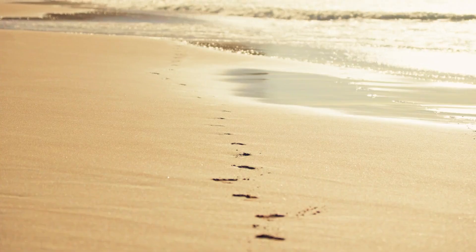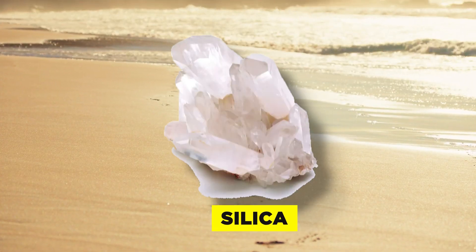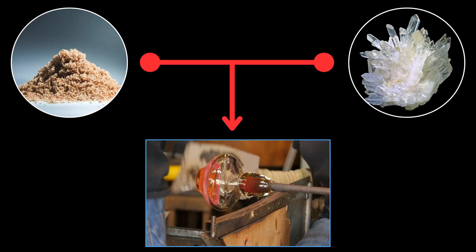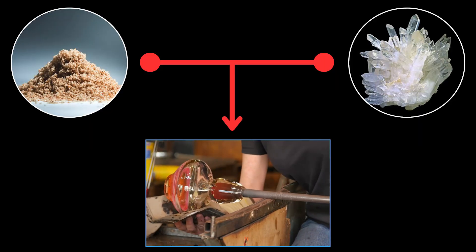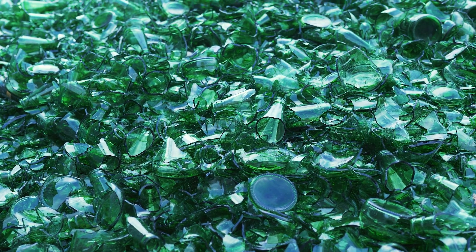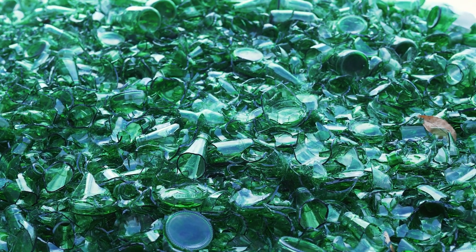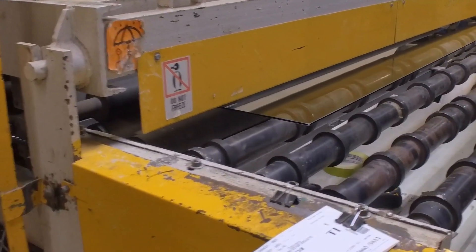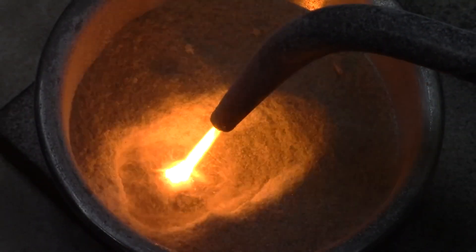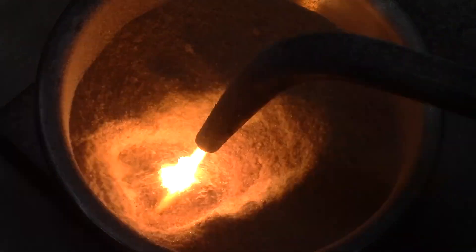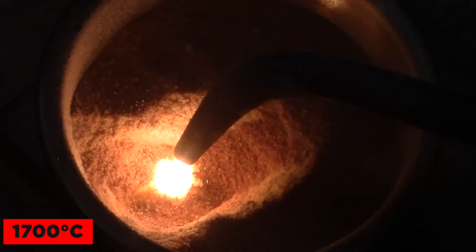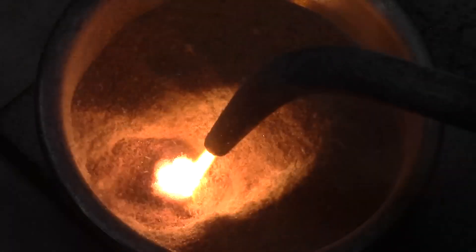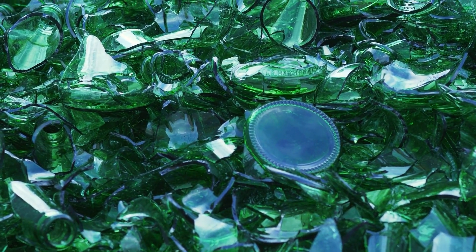Sand is a naturally occurring granular substance composed of finely divided rock and mineral particles, primarily consisting of silica or silicon dioxide. This compound is essential for glass production, undergoing a remarkable transformation under specific conditions. It all begins with the application of extreme heat, reaching levels far beyond typical cooking temperatures, approximately 1,700 degrees Celsius. This intensity is sufficient to melt rock.